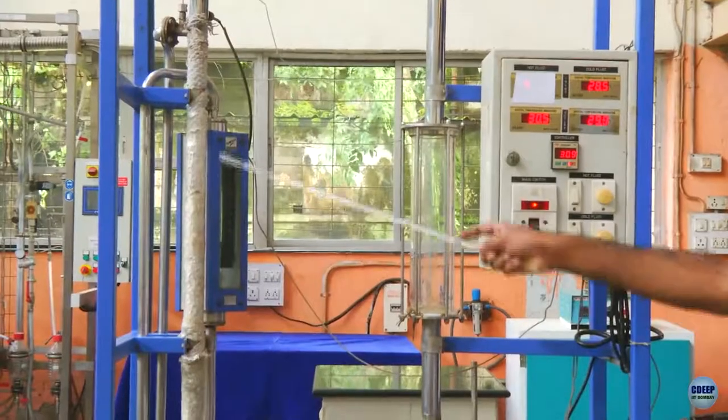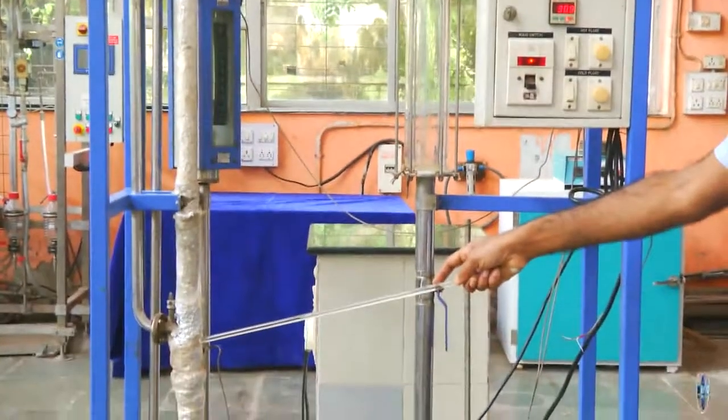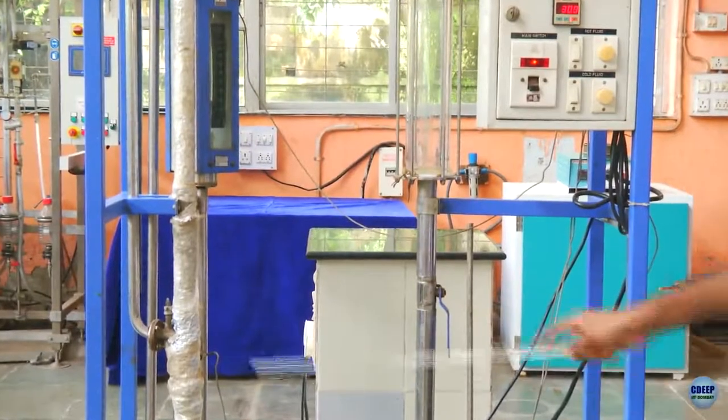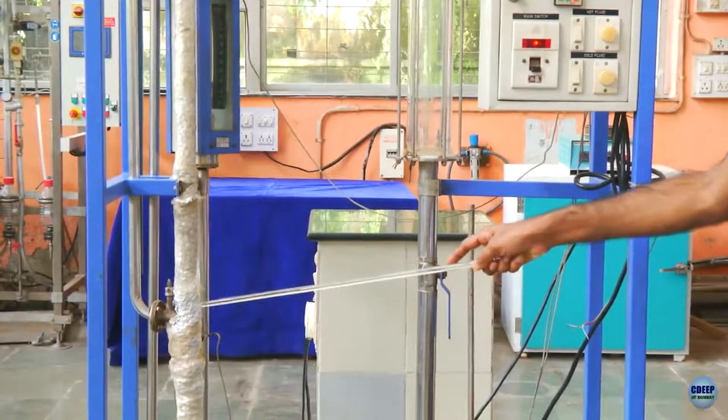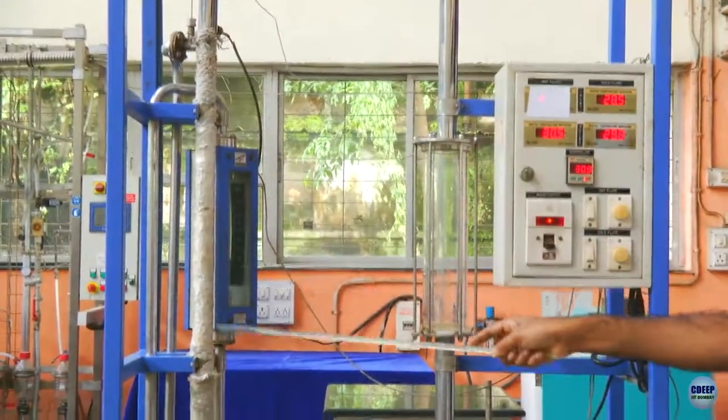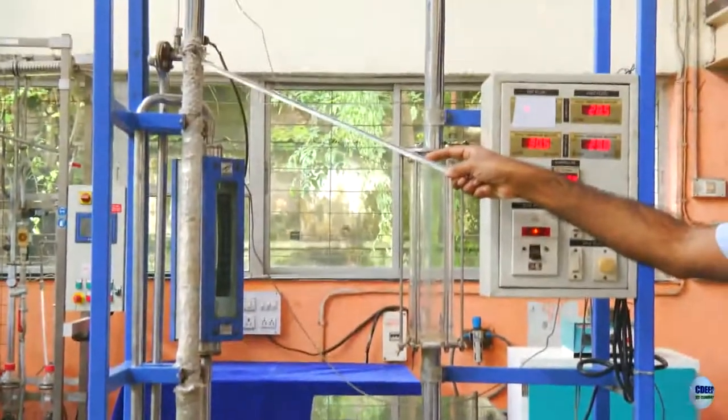We have here a concentric tube heat exchanger. It is also called the double pipe heat exchanger. What you see here is the insulation on the outer surface of the outer pipe. The inner pipe is concentric to the outer pipe.